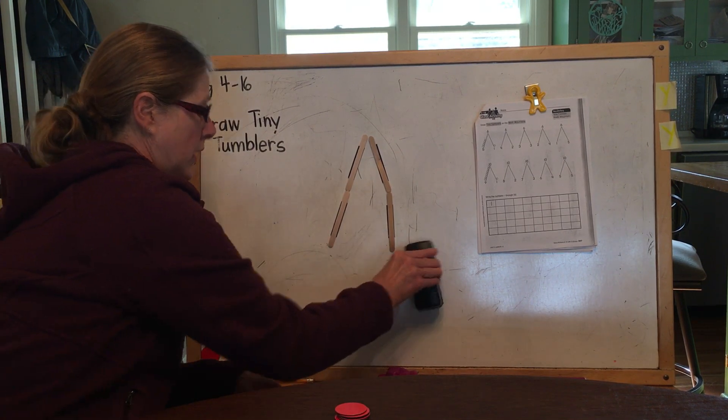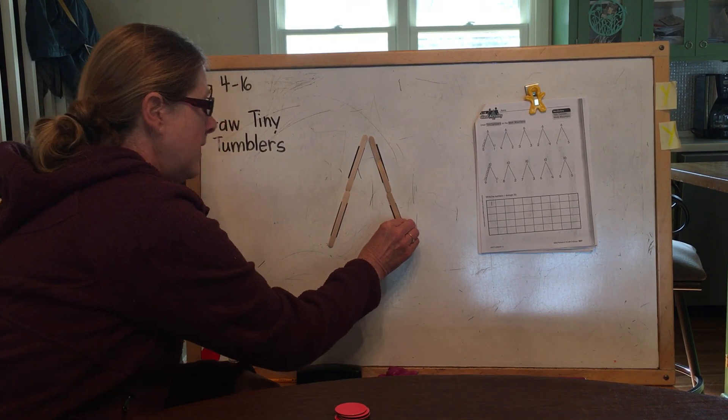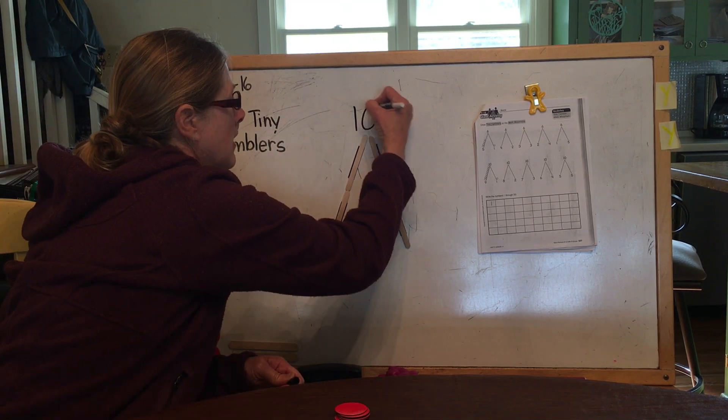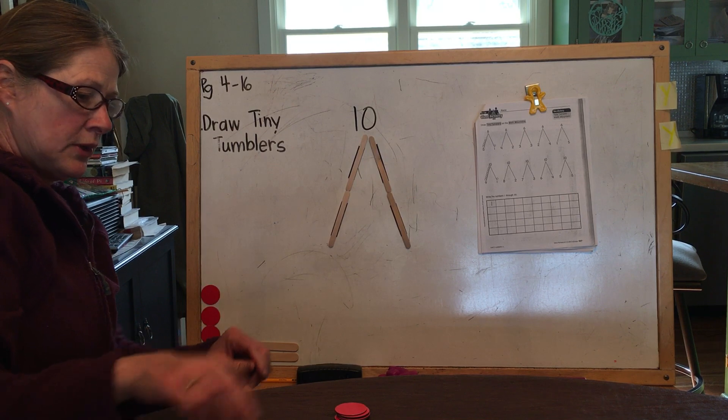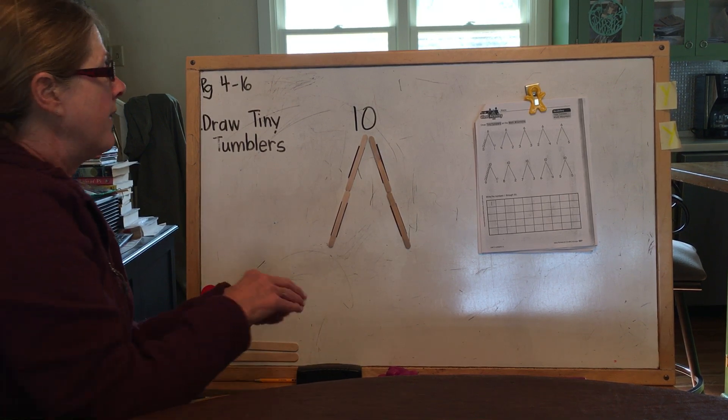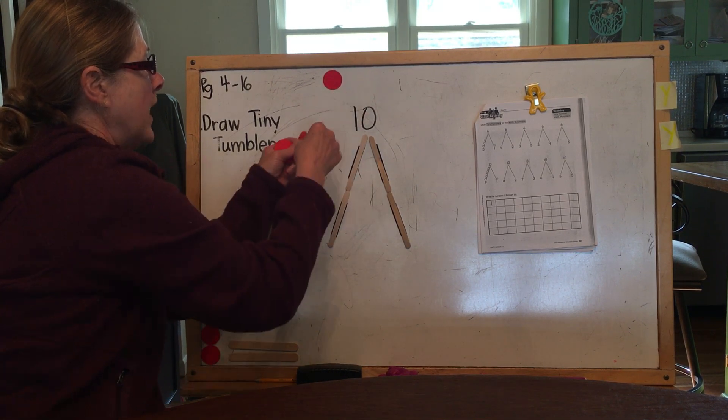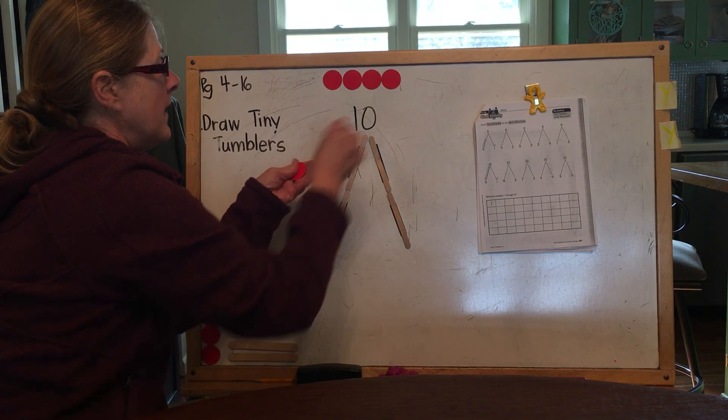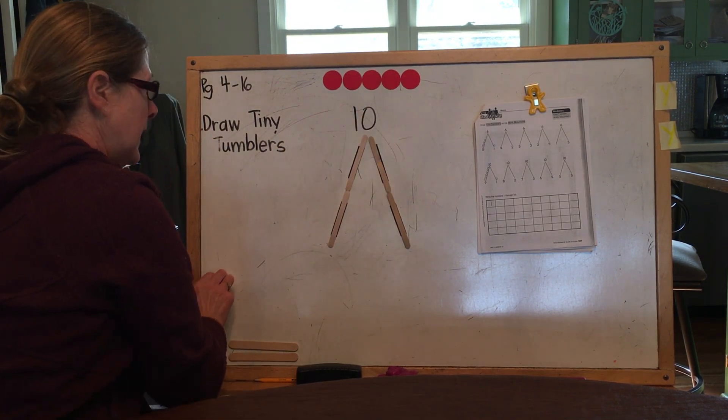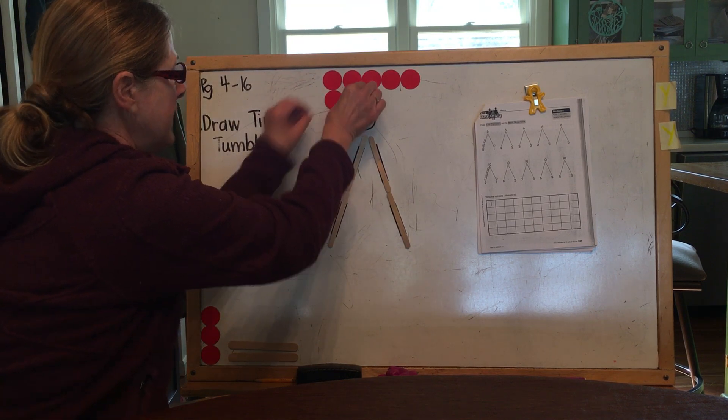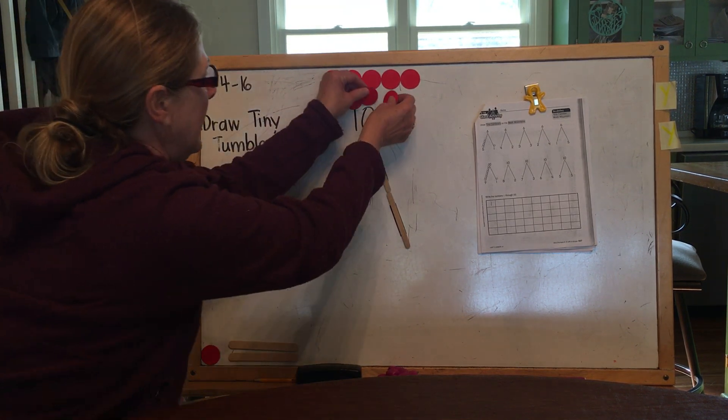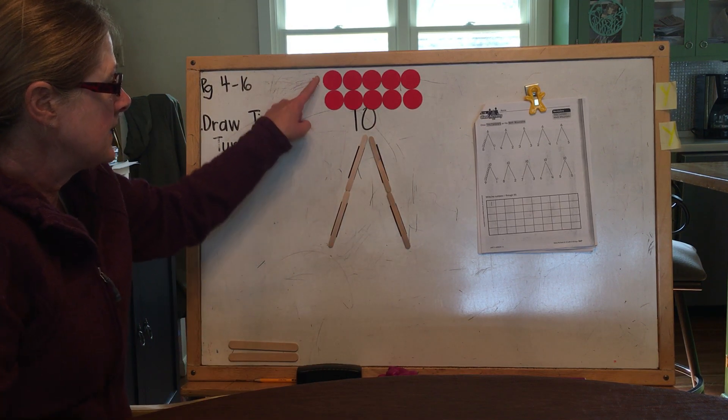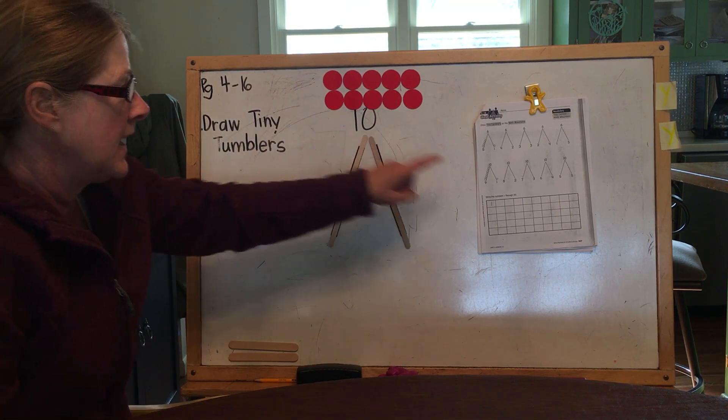And this time, we're going to start with 10. We're going to name our math mountain 10. And we'll have 10 tiny tumblers. We'll have them in groups of five. One, two, three, four, five. And then six, seven, eight, nine, and 10. So 10 tiny tumblers on the math mountain of 10.